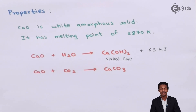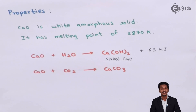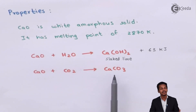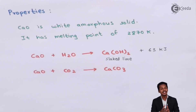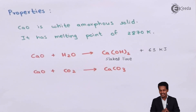The next property: what happens if calcium oxide is treated with carbon dioxide? This is the reversible reaction we discussed during the preparation of CaO from calcium carbonate. Calcium oxide reacts with carbon dioxide to form calcium carbonate, CaCO3. Since it is reversible, we can also convert CaCO3 back into calcium oxide.